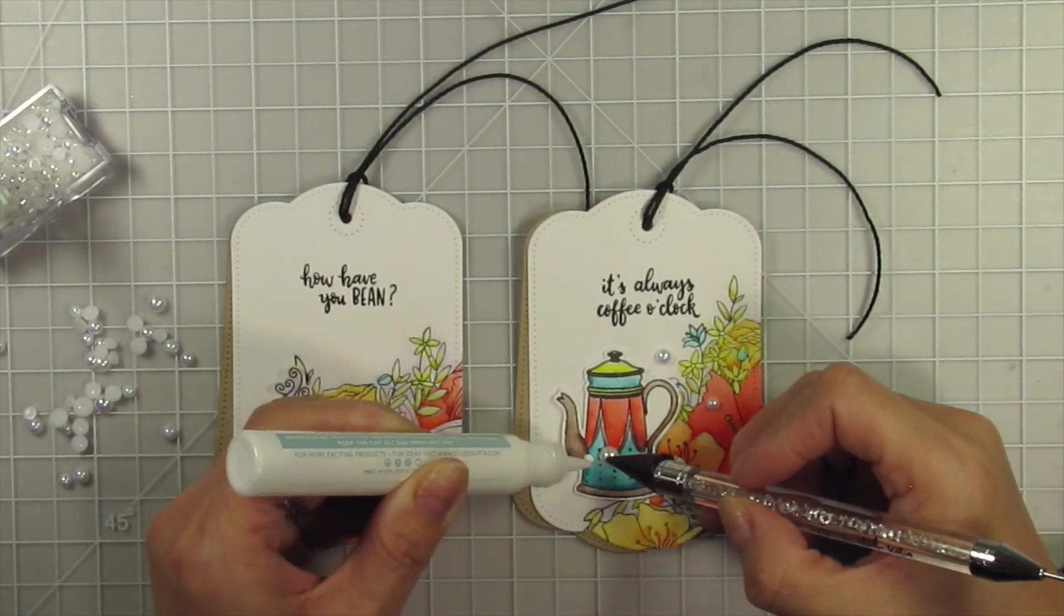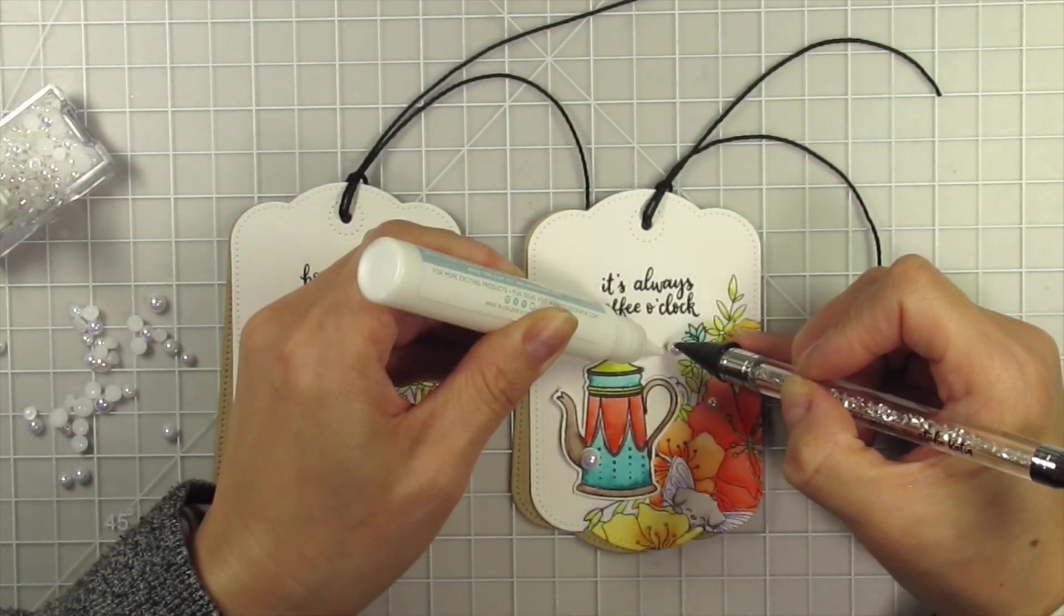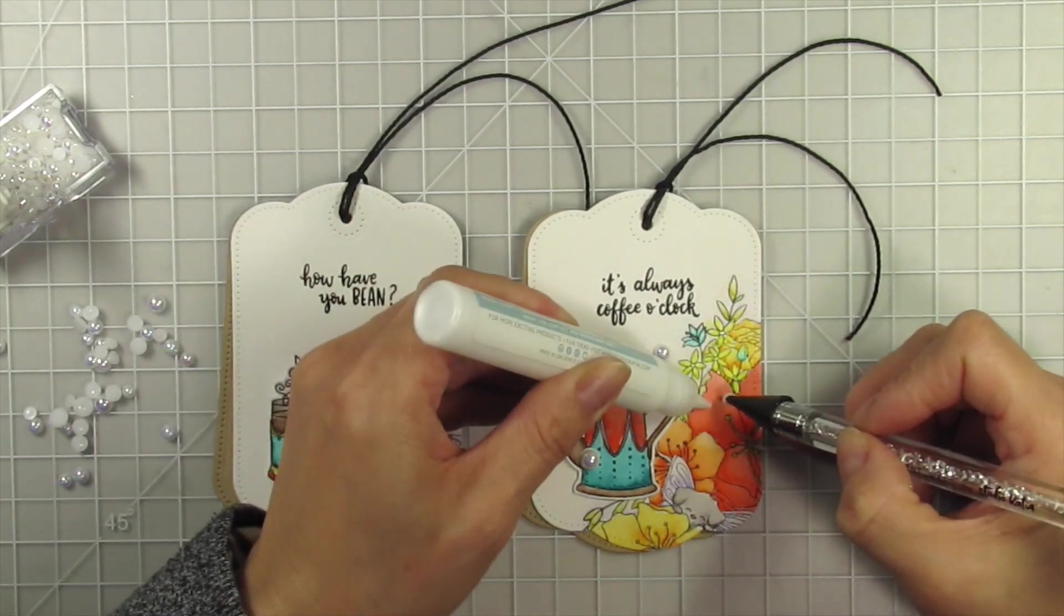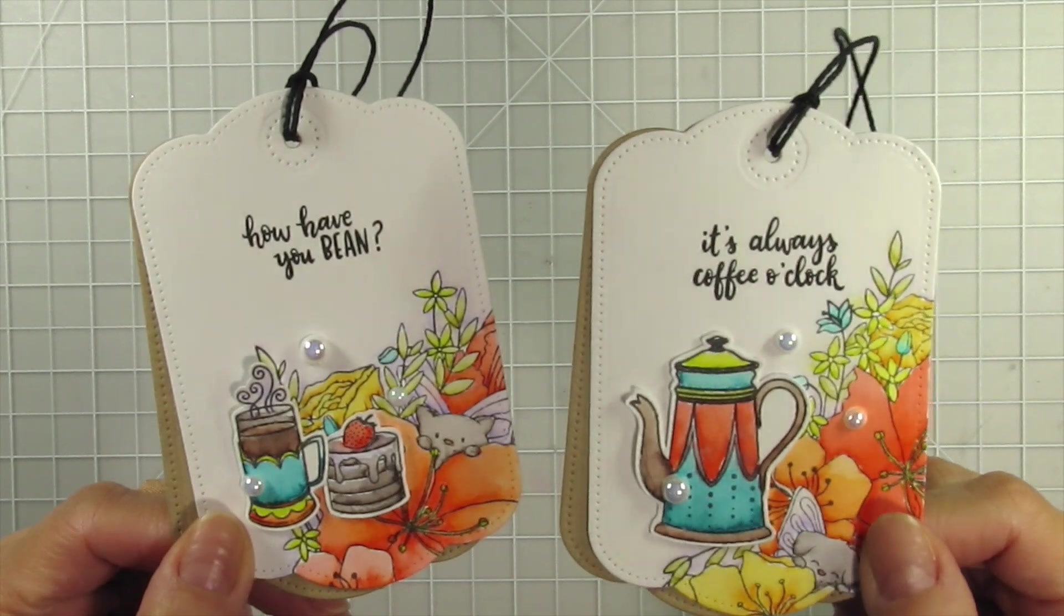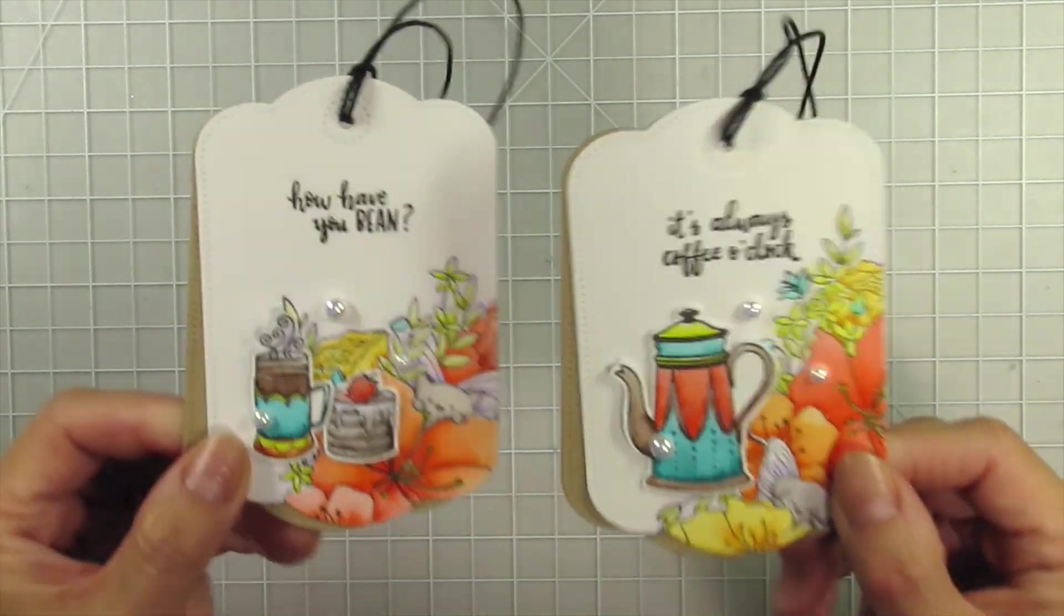To finish, I add Studio Katia's Arctic Breeze Pearls in three sizes using their glue and embellishment wand. Now my tags are done. These would look so cute tied to bags of coffee beans or a mug filled with treats.